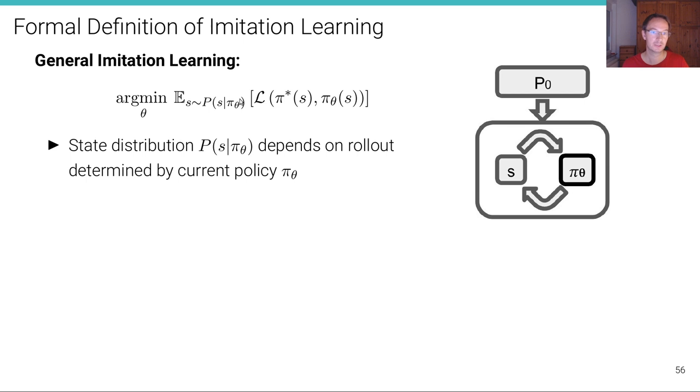The expectation, this is the expectation operator of the loss that compares the expert decision, the expert action at a particular state to the decision that's made by our policy for a particular state. Assuming the parameters, the current parameter sets setting θ. And that expectation is over all states that are reachable by the policy π_θ. This is the distribution of all states that are reachable by the policy π with the parameters θ. Note that in this case, the state distribution p of s given π_θ depends on the roller determined by the current policy π_θ. So it depends on the parameter θ.